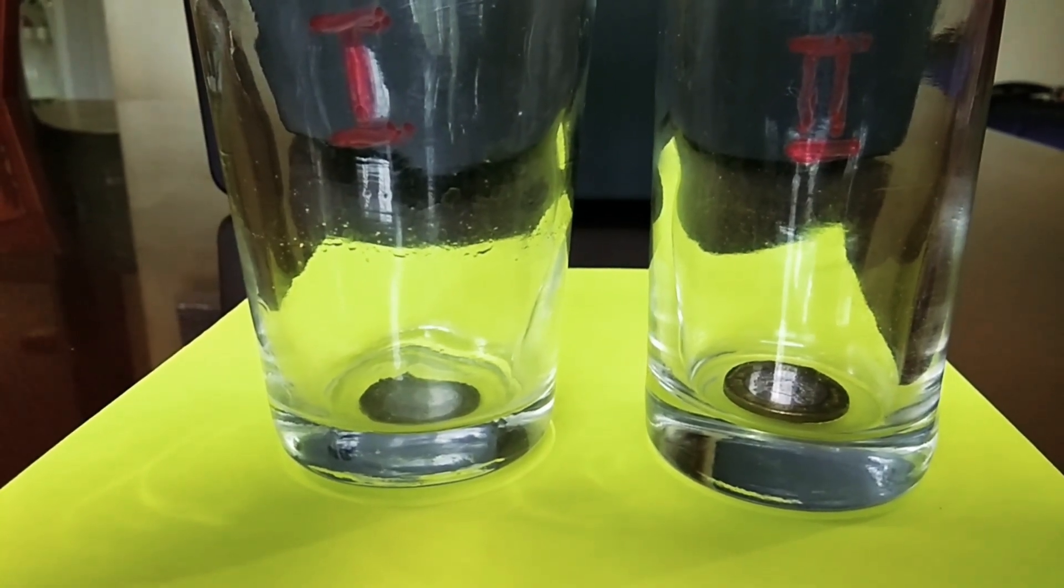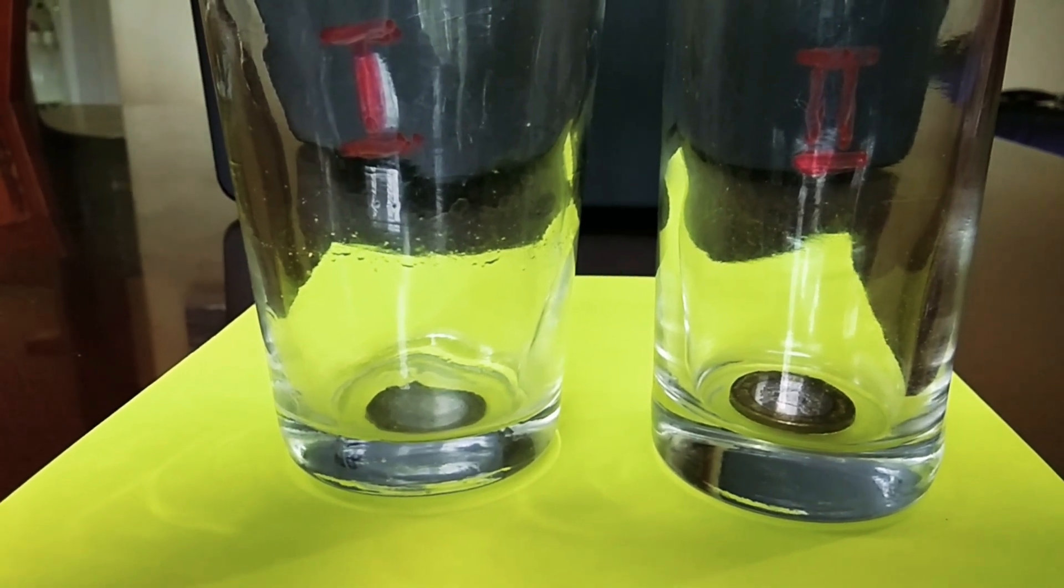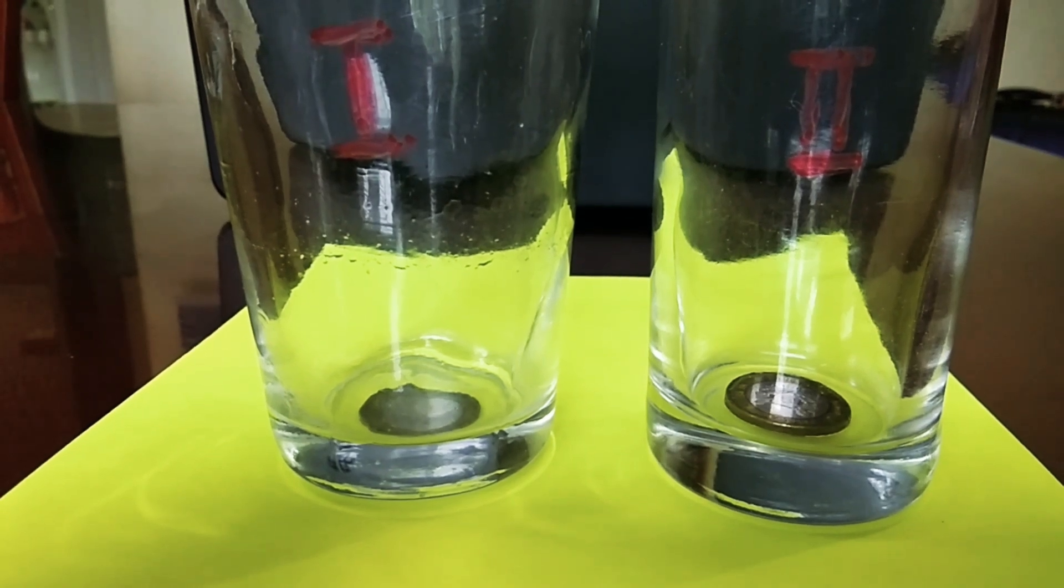Look at these two glasses. A coin is placed at the bottom of glass number one and a coin is placed inside glass number two.